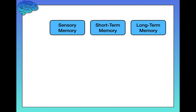Here are the three systems of memory: sensory memory, short-term memory, and long-term memory. You've probably seen some of these before, specifically short-term and long-term memory. But the way these terms are used in everyday life is actually incorrect, and we'll get into that very soon. Sensory memory is probably a new one, and we're going to dive into all of this.